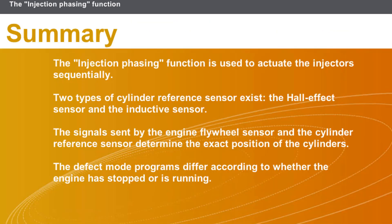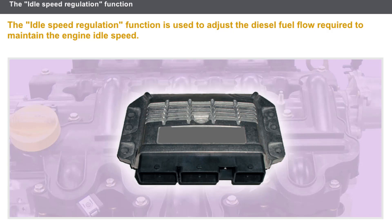In summary for injection phasing: the function is used to actuate the injectors sequentially; two types of cylinder reference sensor exist — the Hall effect sensor and the inductive sensor; the signals from the flywheel sensor and the cylinder reference sensor determine the exact position of the cylinders; and defect mode programs differ according to whether the engine has stopped or is running.